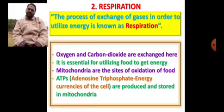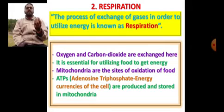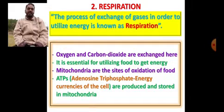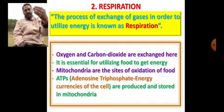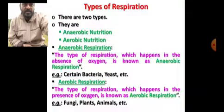This oxygen is very much essential for utilizing food, for release of energy. The energy is stored in the form of biochemical compounds called ATPs — adenosine triphosphates — and these are nicknamed as energy currencies of the cell. We have learned this in class 9; it's just a reminder. These ATPs are produced and stored in mitochondria.